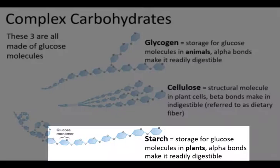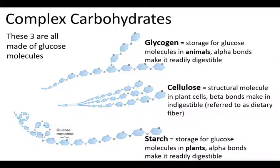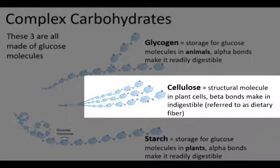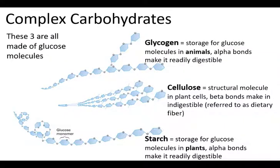Starch is also an example of a carbohydrate. It has the same function — storage of glucose — but in plants, not animals. Another important carbohydrate is cellulose. Plants use cellulose to make cell walls. Molecules like cellulose use beta bonds between the sugars, which are not easily broken down.